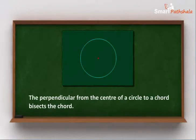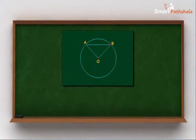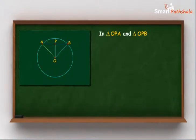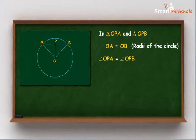Consider a circle with center O and AB as a chord. Now, in triangle OPA and triangle OPB, OA is equal to OB as they are radii of this circle. Angle OPA and angle OPB are right angles and OP is common.